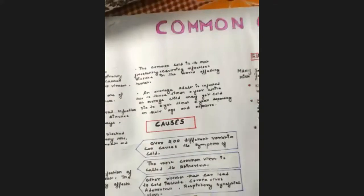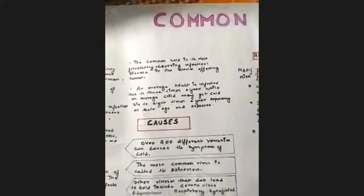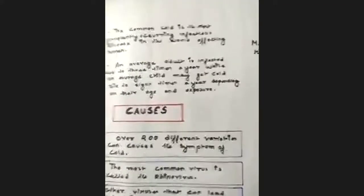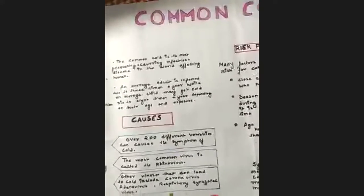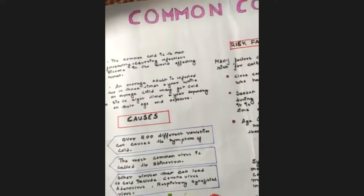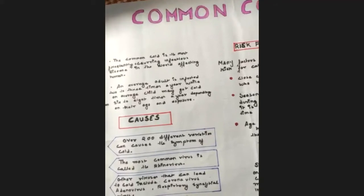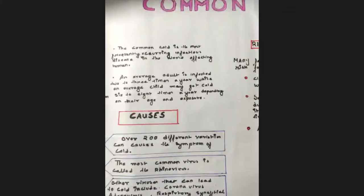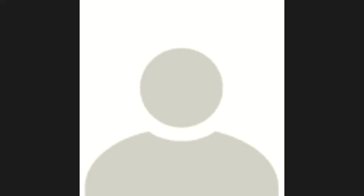Common cold is the most frequently occurring infectious disease affecting humans. An average adult is affected two to three times a year, while every child may get a cold six to eight times in a year depending on their age. So children get more affected than adults.